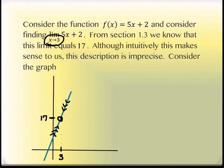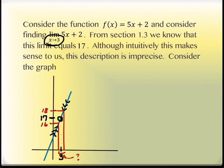The question becomes: how close do I have to be? How close is close enough? For instance, if I wanted to be within one unit of 17 — between 16 and 18 — how close to x = 3 on the x-axis would I need to be to guarantee that? That's the question we're going to answer specifically for these numbers: epsilon of 1 around y = 17, with x approaching 3.